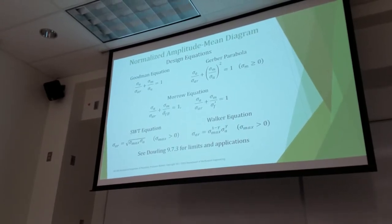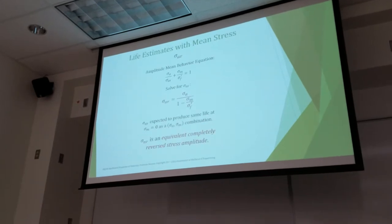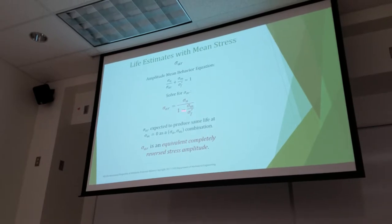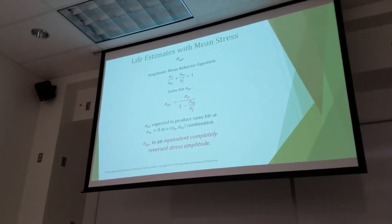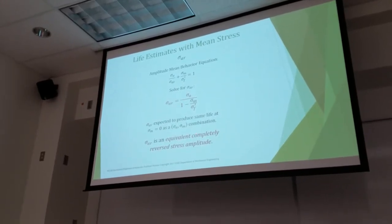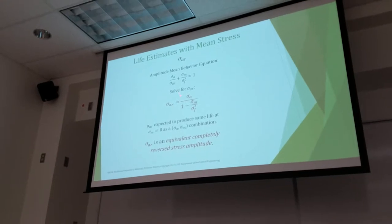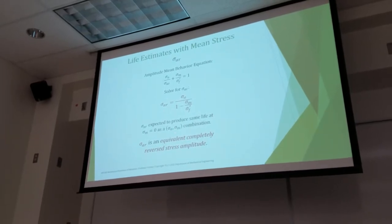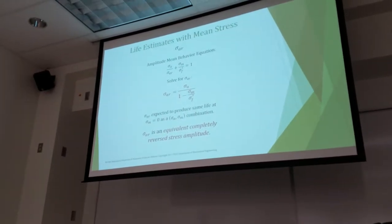Gerber might be a little too conservative for some materials. In the end, if you're using a novel material, you're going to have to test it yourself. So what do we do? We take our design equations and rearrange them algebraically to solve for Sigma AR — because Sigma AR is an equivalent completely reversed stress amplitude for the Sigma A, Sigma M combination. That's what our normalized amplitude-mean diagram is doing: allowing us to calculate Sigma AR so we can take it back into our stress life equation and determine cycles to failure.